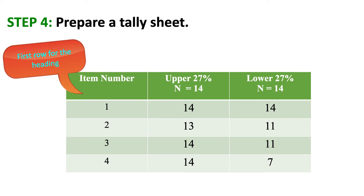Step 4: Prepare a tally sheet. Get the number of students from the upper and lower groups who got each item correct. Create a table with 3 columns and 51 rows — one for the heading and 50 questions. The first column is for item number, the second for the number of upper-group students who got the item correct, and the third for the number of lower-group students who got it correct. For example, 14 students in both the upper and lower group got item 1 correctly. All students from the upper group got item 4 correctly, but only 7 — half — of the lower group got item 4 correctly.